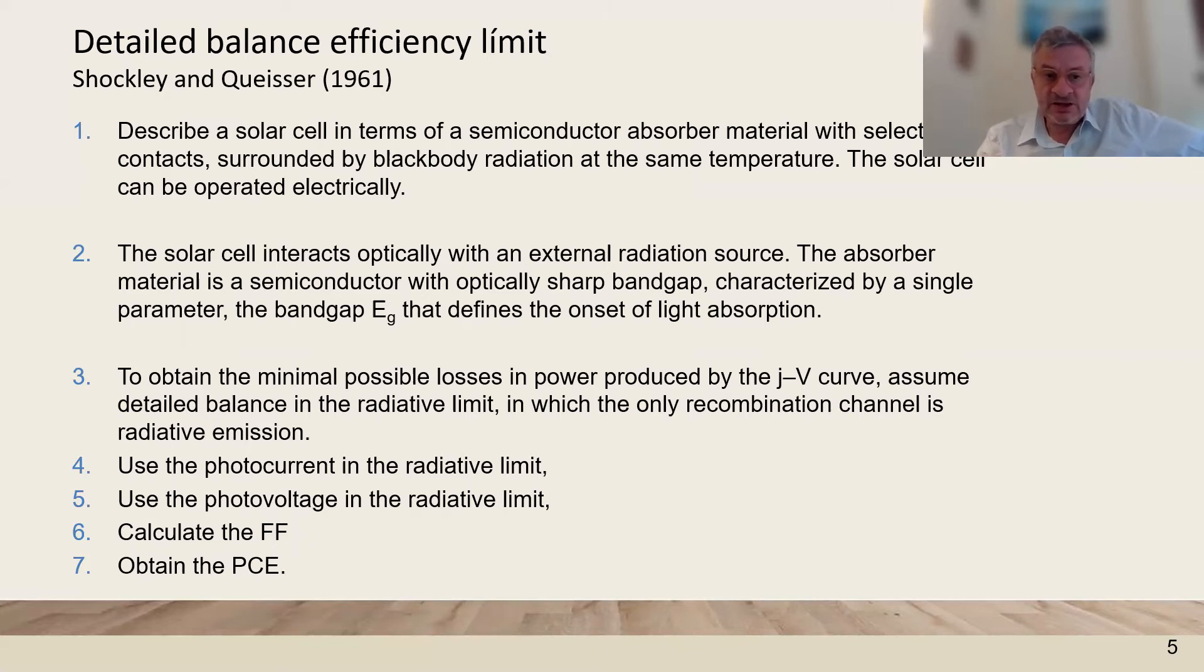The next assumption is that the recombination losses are minimal, so that we work in the radiative limit, in which all the recombination is radiative emission. Then we can find the photocurrent in the radiative limit, and we can have the photo voltage in the radiative limit. We have calculated all these things.